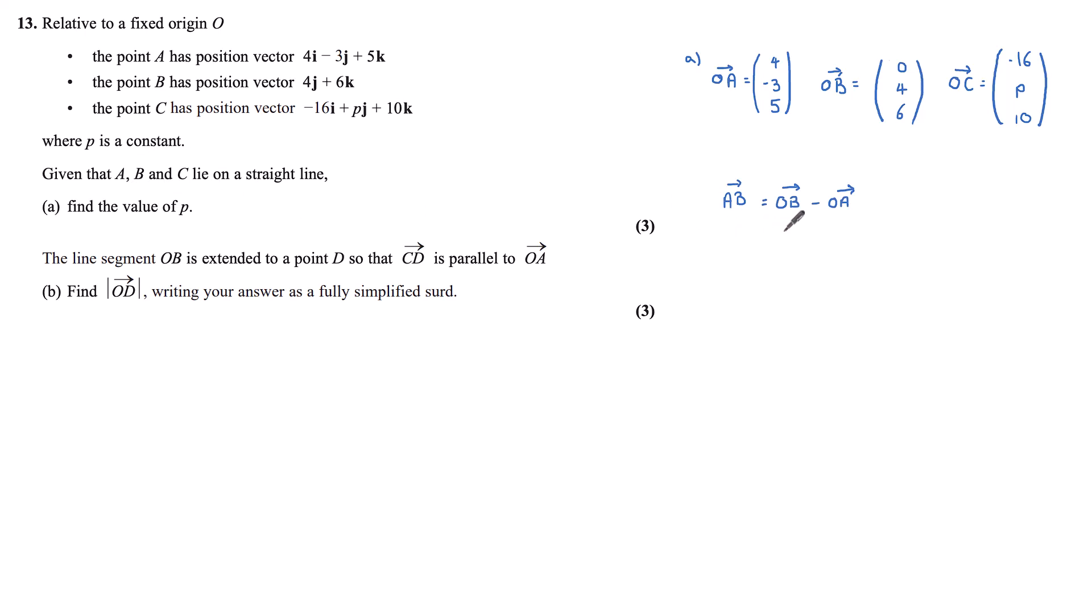AB is the same as OB minus OA, so OB is (0, 4, 6), OA is (4, -3, 5). Subtracting gives me a value for AB of (-4, 7, 1).